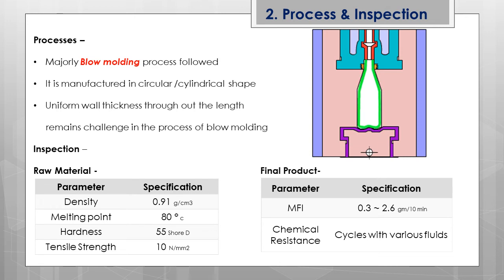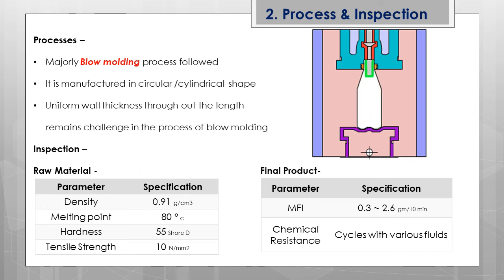The product is exposed to those fluids for a certain time duration and then followed for multiple cycles. After that, the surface conditions are evaluated for decomposition, degradability, and other qualities. This evaluation is called the chemical resistance test.